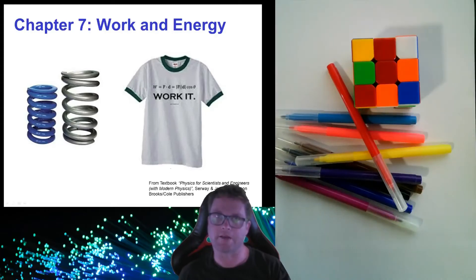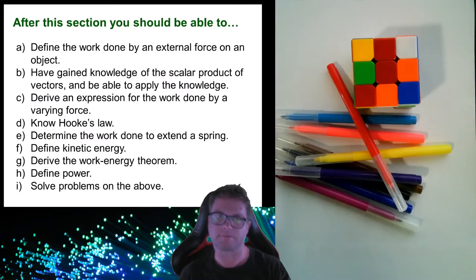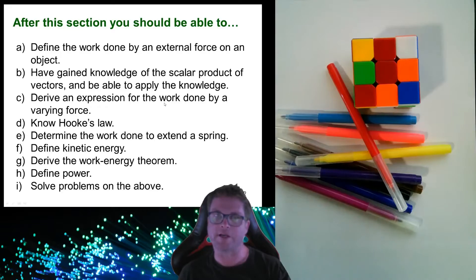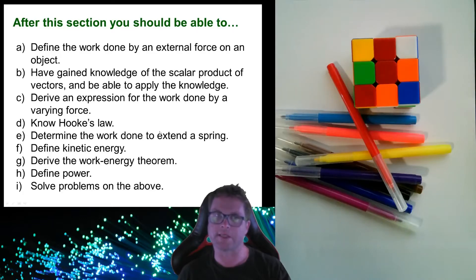Next we're going to be looking at a new chapter — chapter 7, work and energy. In this chapter we'll start with the definition of work done by an external force, then look at the scalar product or dot product and rewrite the definition in terms of it. We'll derive the work done by a varying force, look at springs and Hooke's Law, kinetic energy, the work-energy theorem, the definition of power, and then solve related problems.